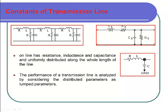In a transmission network, we have resistance, inductance, and capacitance. We also have to take the conductance portion — though it is very less — in order to calculate an accurate result. These parameters are all evenly distributed over the entire length of the transmission network, but for our analysis we have to consider them as lumped parameters.